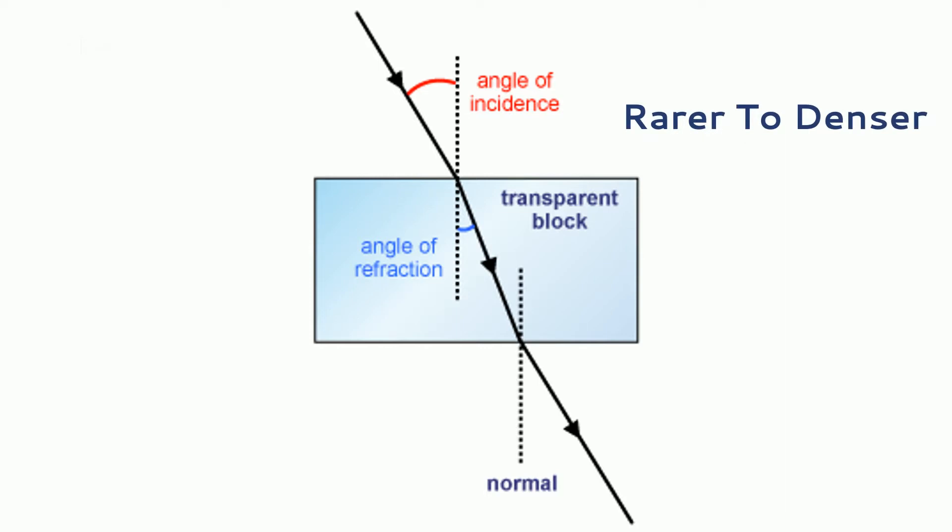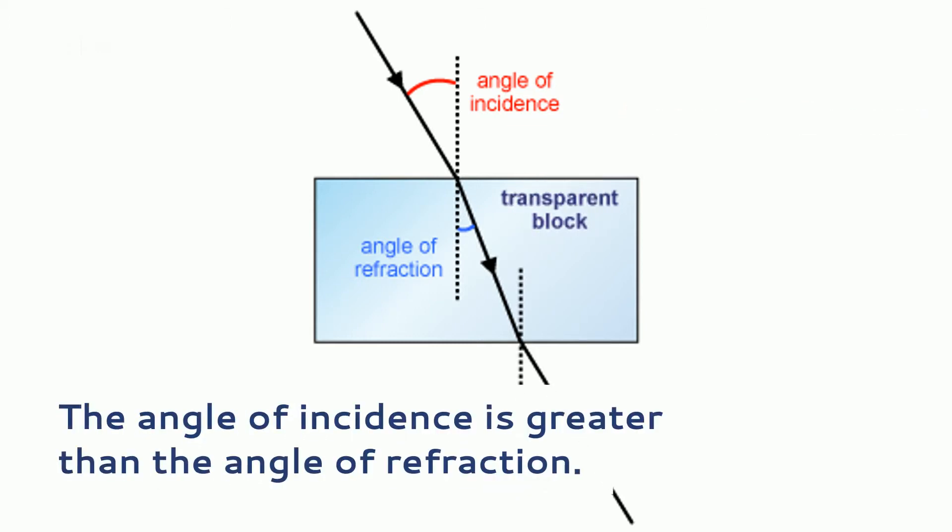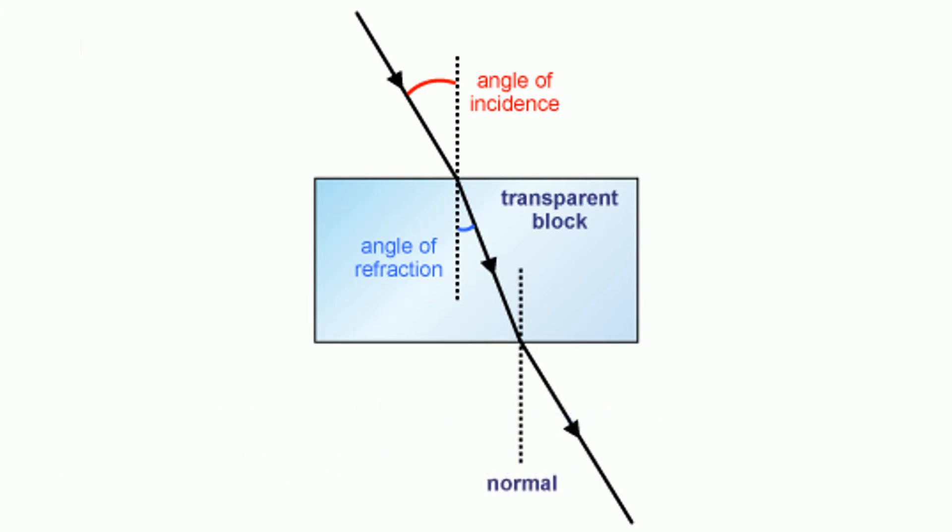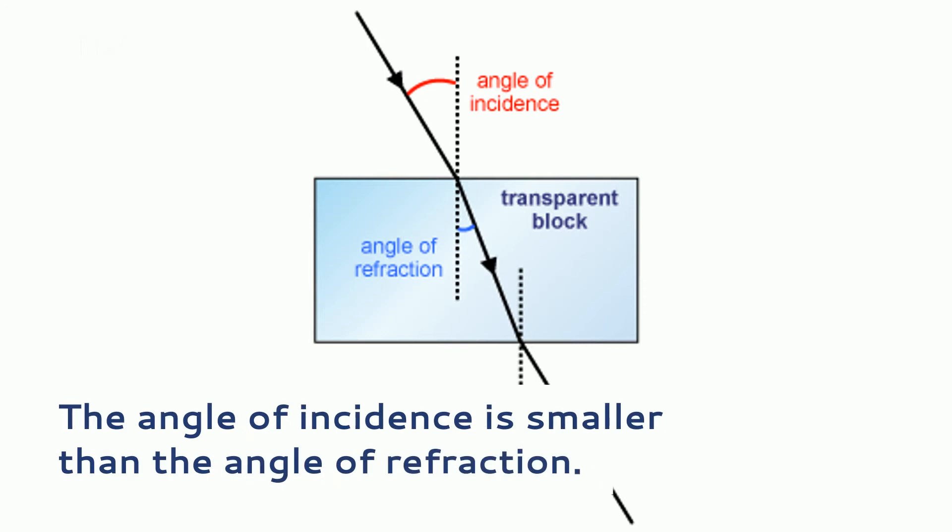If the ray of light passes from a rarer to a denser medium, as from air to glass, the ray is refracted towards the normal, that is, the angle of incidence is greater than the angle of refraction. On the other hand, if the ray passes from a denser to a rarer medium, as from glass to air, the refracted ray moves away from the normal, that is, the angle of incidence is smaller than the angle of refraction.